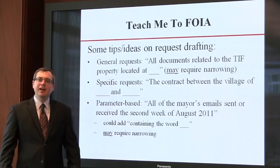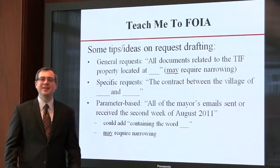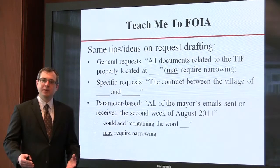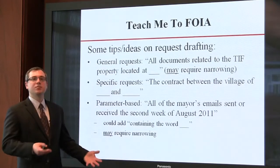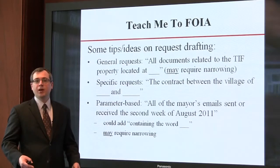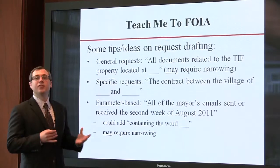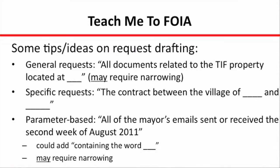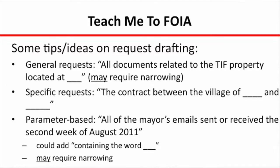Let's talk now about some tips, ideas, practice pointers, and how to draft your request. If you're not familiar with the process and don't have a lot of experience drafting FOIA requests, it can be a little bit of an art form — counterintuitive in translating whatever issue you're concerned about into actual requests for documents subject to FOIA. One method is a more general request. If there's something about a decision made in a particular TIF property, for example, you could request all documents related to the TIF property located at a given address. You can also make a more specific request — for example, the contract between the village and a subcontractor. You could try a parameter-based request: all of the mayor's emails sent or received the second week of August 2011, and you could add 'containing the word blank.'